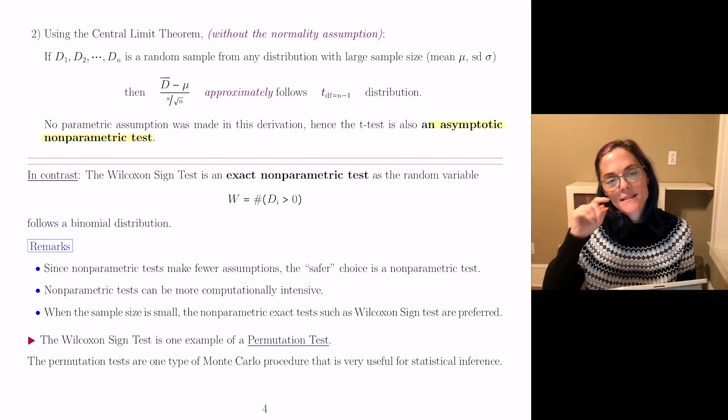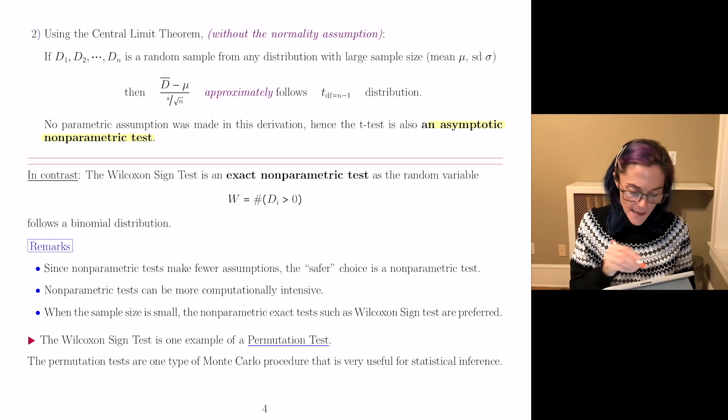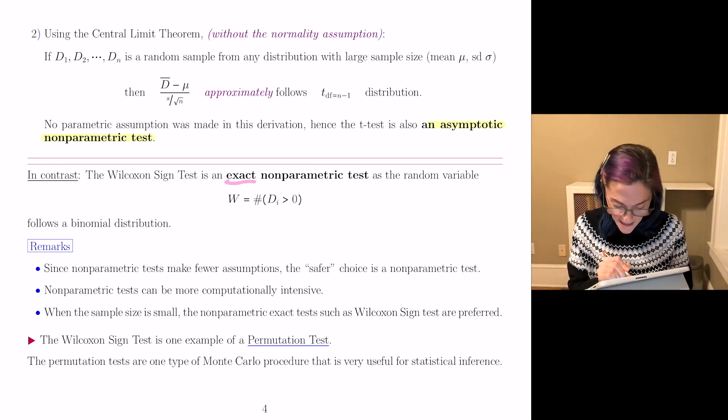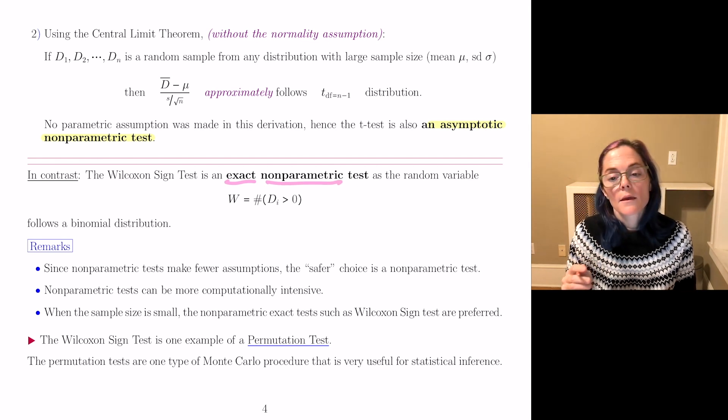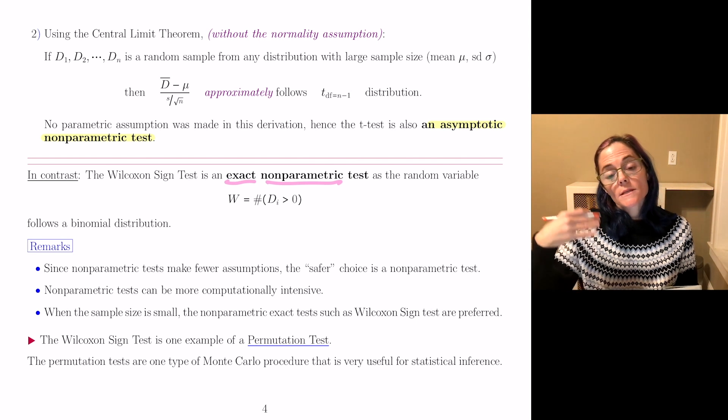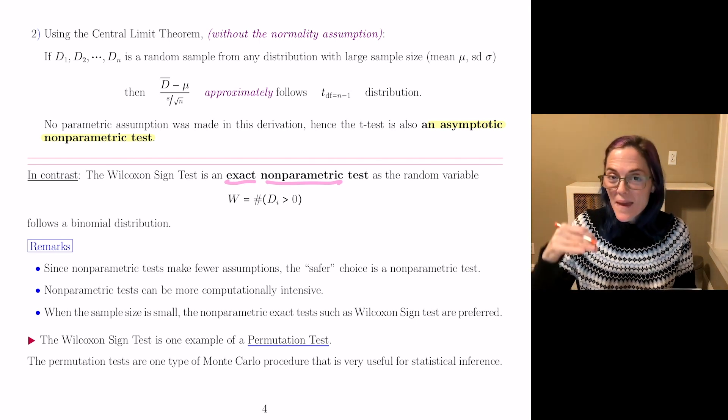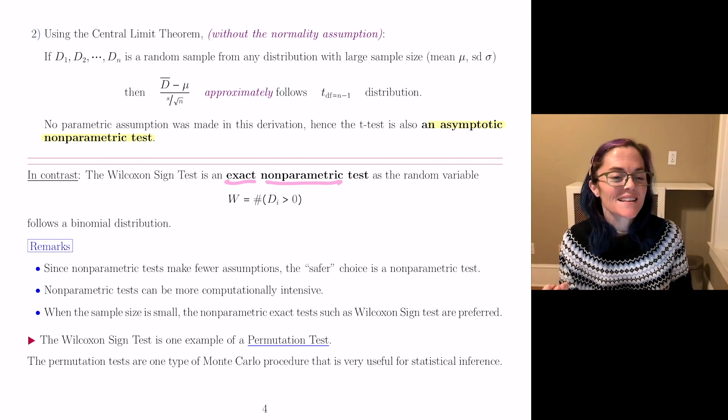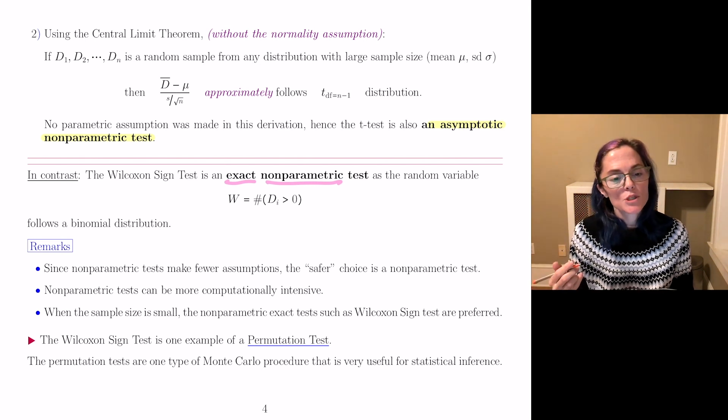In contrast, the Wilcoxon sign test is exact and nonparametric because this random variable W, which is the number of pairs such that you have a positive pairwise difference, follows a binomial distribution.